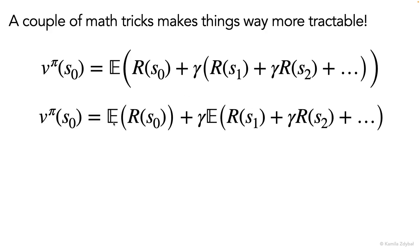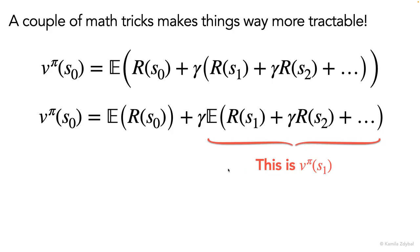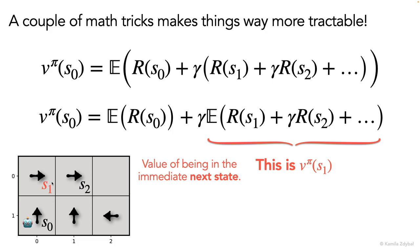And now we can distribute the expected value. And notice that this whole expression is really the value of being in state s one — this expression has got the same structure as the expression we had for s zero, it's just that the indices for the states got shifted by one. So you can look at this as the value of being in the immediate next state s one, that is achievable from the current state s zero.